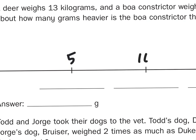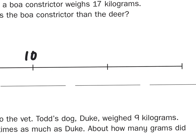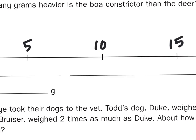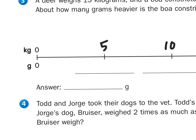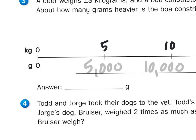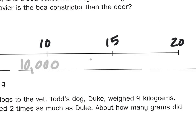5, 10, 15, 20. And for every 5 kilograms, I'm going to have 5,000 grams. So 5,000, 10,000, 15,000, and of course 20,000.